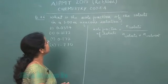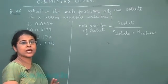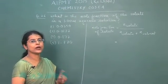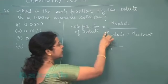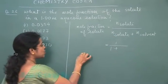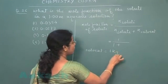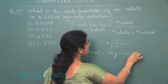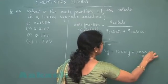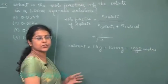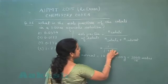In this question, the solution is one molal, so one mole of solute is present in 1 kg of water. The number of moles of solute is 1. The solvent is 1 kg, which equals 1000 gram, which equals 1000/18 moles, approximately 55.5 moles.